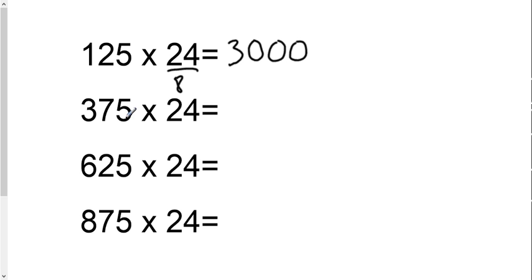Now to multiply by 375, you need to recognize that 125 was 1 eighth. 375 is 3 eighths, which means you still divide by 8, but at the end you have to multiply by 3. So 24 divided by 8 is still 3, and 3 times 3 is 9. So this is 9,000.